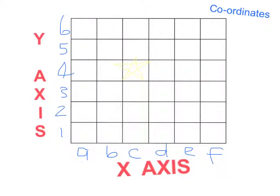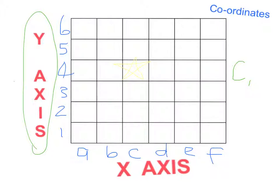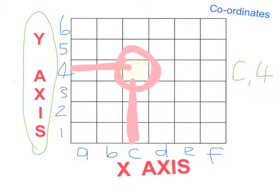We use the coordinates — the labelling of the grid — to help us find where something is. When we're reading it, we have to read the x-axis along first. So the star matches up with the letter C. And then we read the y-axis — where does it match up with the star? Well, the star matches up here with the 4. So my coordinates for this star on the map is C4. I have used the x-axis and the y-axis to help me find the star. It is on C, and 4 across. That is the position of the star on the map.